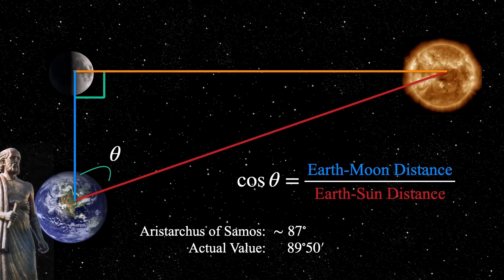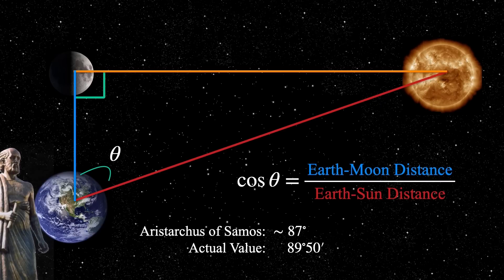Aristarchus then endeavored like crazy to measure the angle in the sky between the moon and the sun. Remember, the 90 degree angle of the triangle is where the moon is. But then the angle that when we look at the moon and we look at the sun, that is less than 90 degrees.